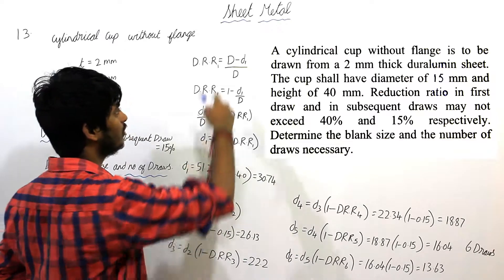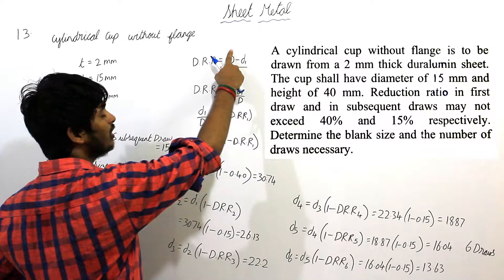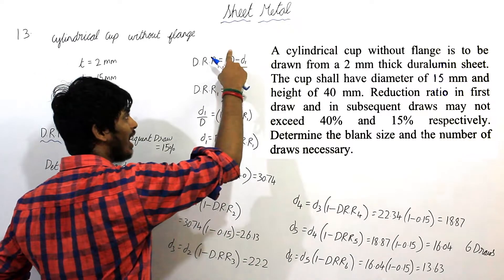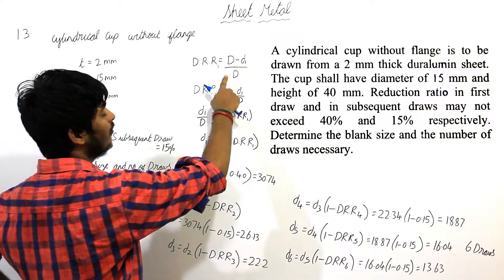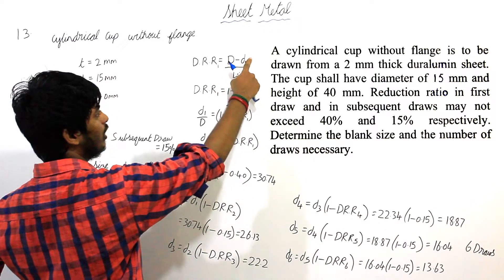So the diameter is reduced from blank diameter to the first draw, that is small d1 by capital D. We need to find this small d1 value.